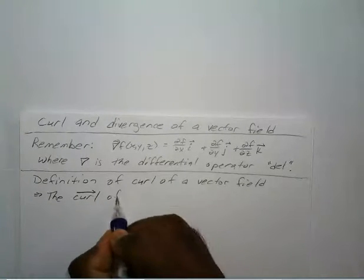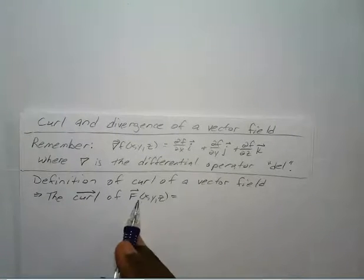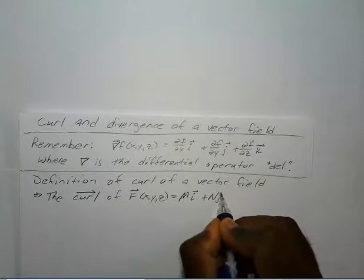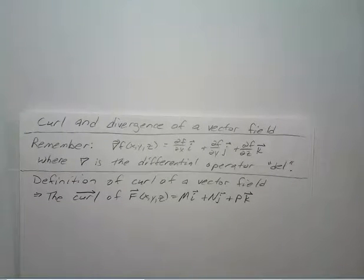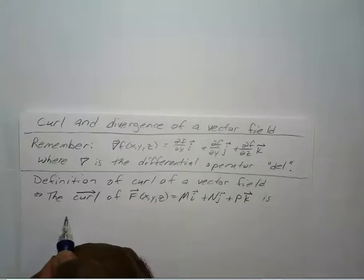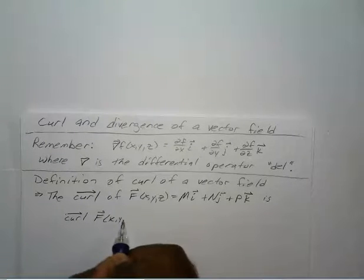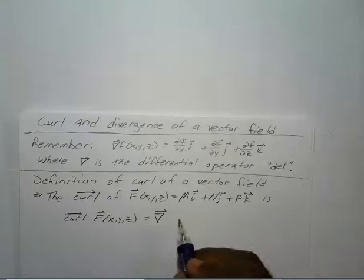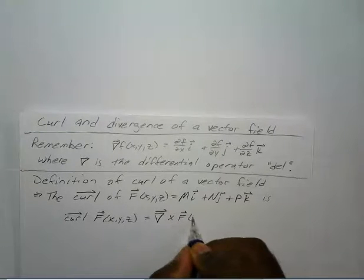So the curl of your vector field — remember your vector field is M times the i unit vector, plus N times the j unit vector, plus P times the k unit vector, where M, N, and P are functions. So the curl of our vector field is equal to our del vector and the cross product of our vector field.